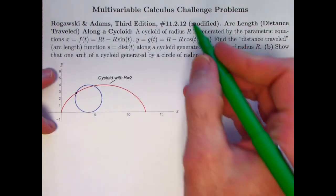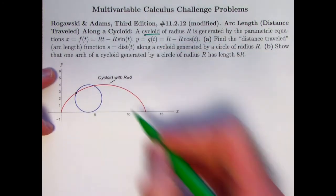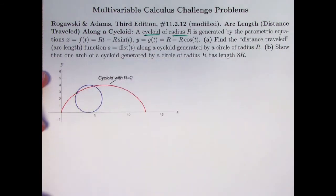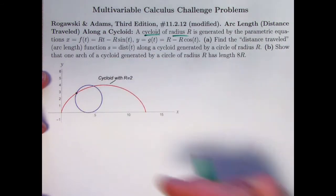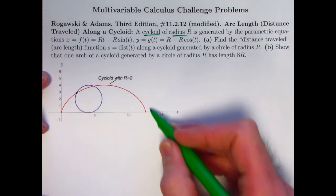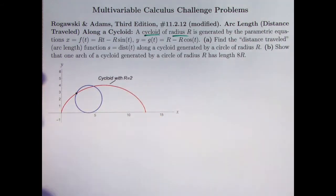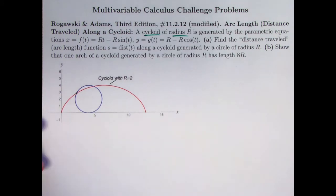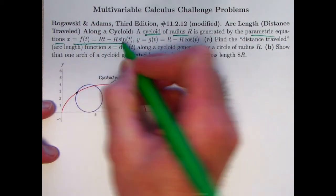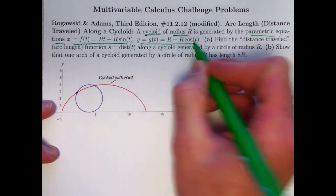What we have here in this problem is a cycloid — this red curve that you see here — of radius r, meaning generated by a circle of radius r that is rolling along the x-axis. You follow a point along that circle starting at the origin, and it will traverse a red curve like this. In this case, r happens to equal 2. It's given by these parametric equations; I'm not going to derive these equations, but they can be derived using trigonometry.